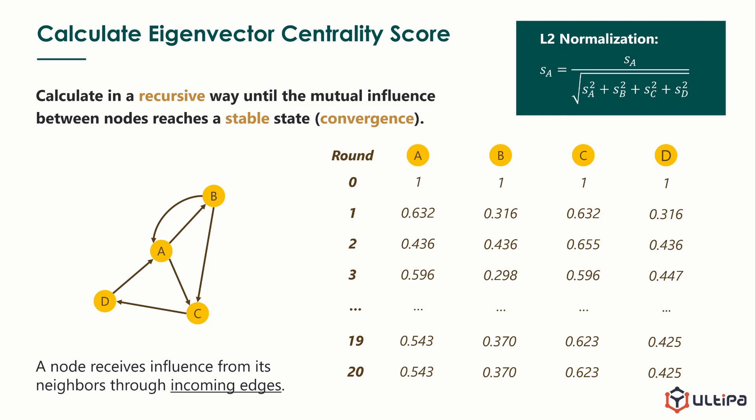Look at the scores. It's the same as we analyzed. Node C has the highest centrality, and then node A. Node D is influenced by node C, so it has higher score than node B.